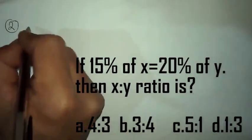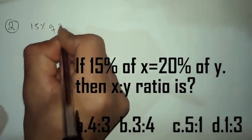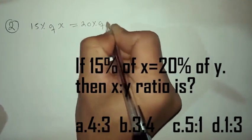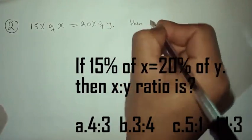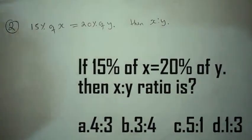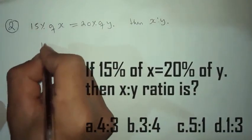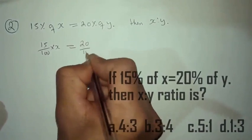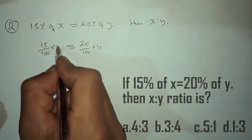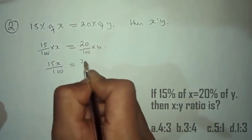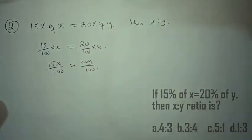Question number 2: if 15% of x is equal to 20% of y, then what is x to y ratio? So 15 over 100 into x is equal to 20 over 100 into y. That gives us 15x over 100 equals 20y over 100.